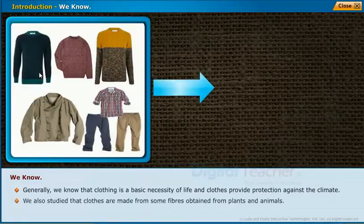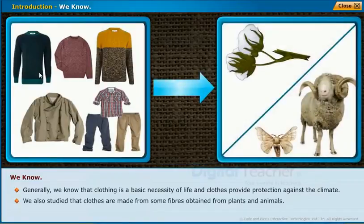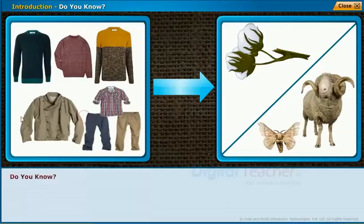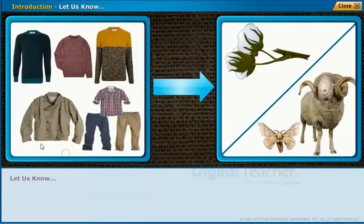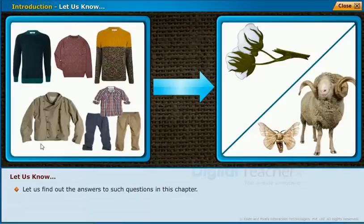Generally, we know that clothing is a basic necessity of life and clothes provide protection against the climate. We also studied that clothes are made from fibers obtained from plants and animals. Do you know which fibers are obtained from plants and animals, and which part of the animal is useful to make fabrics? Let us find out the answers in this chapter.